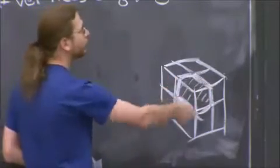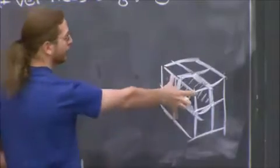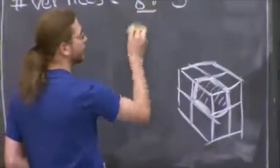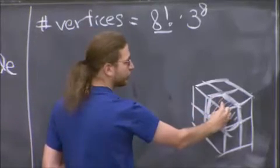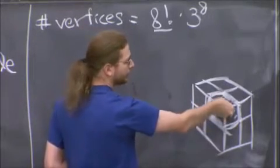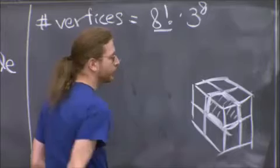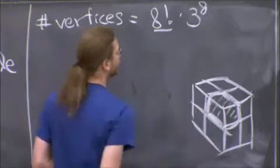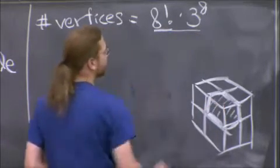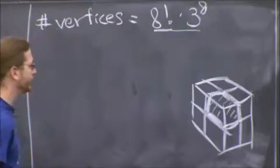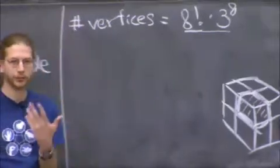You can essentially permute those cubies within the cube however you like. That's 8 factorial. And then each of them has three possible twists. It could be like this, it could be like this, or it could be like this. OK, so you've got three for each. And this is actually an accurate count. You're not over counting the number of configurations. All of those are, at least in principle, conceivable.